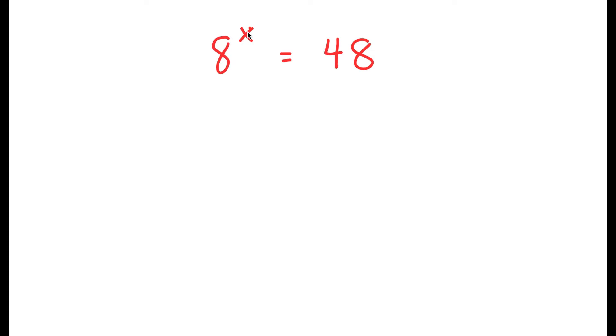So to start off, we can already tell that x is going to be a decimal because 8 to the power of 1 is equal to 8 and 8 to the power of 2 is equal to 64. And 48 is somewhere in between 8 and 64, meaning x is going to be somewhere in between 1 and 2.